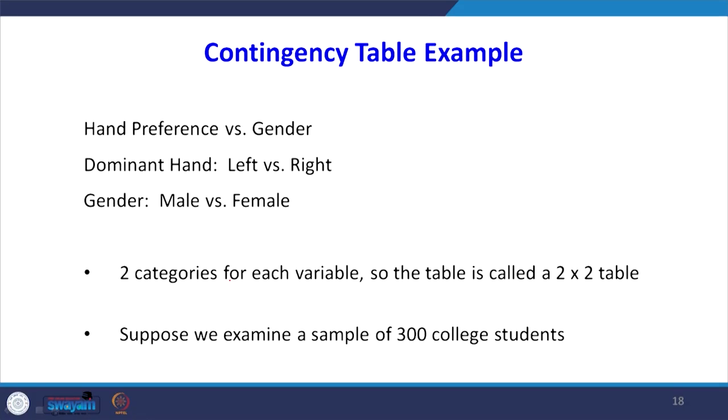The table we used is called a contingency table. It is useful in situations involving multiple population proportions and is used to classify sample observations according to two or more characteristics. It is also called a cross-classification table.